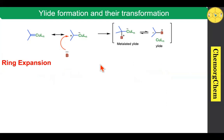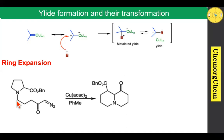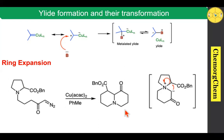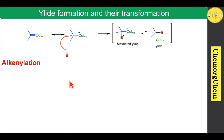Next we move on to ring expansion reaction. This reaction is based on nitrogen ylide formation. The substrate has both a nitrogen atom and a diazo compound within the same framework. When you use copper acetylacetonate, it readily produces the corresponding fused compound. Initially, the nitrogen's lone pair of electrons interacts with this center, producing the corresponding ylide compound; after formation of the ylide, ring expansion takes place to produce the bicyclic compounds.